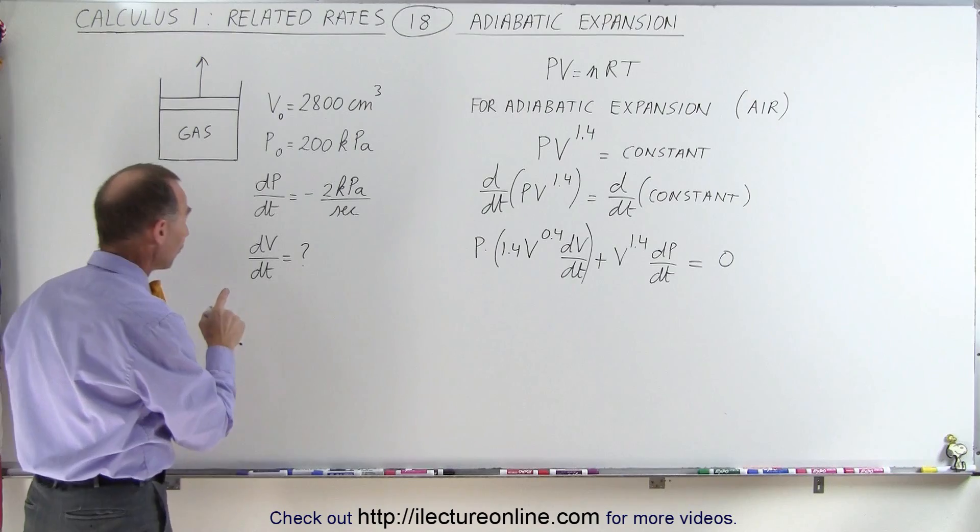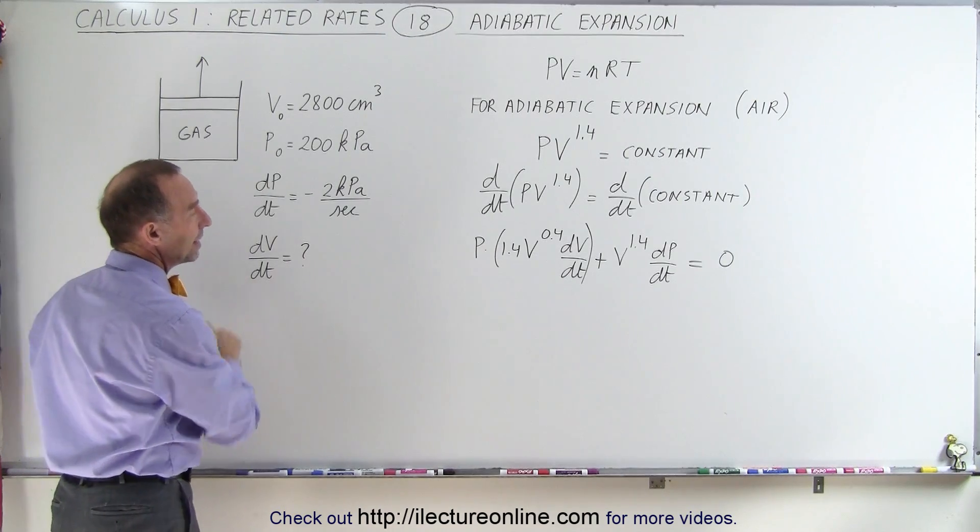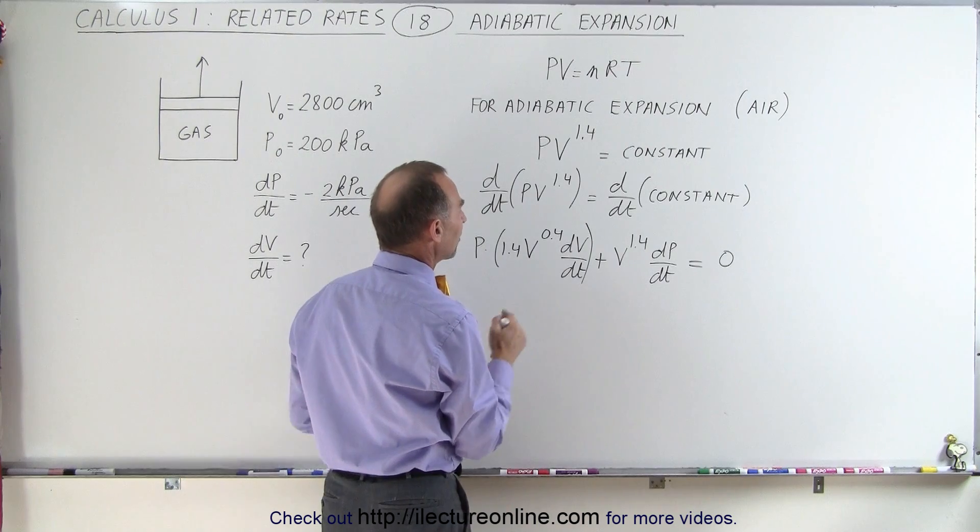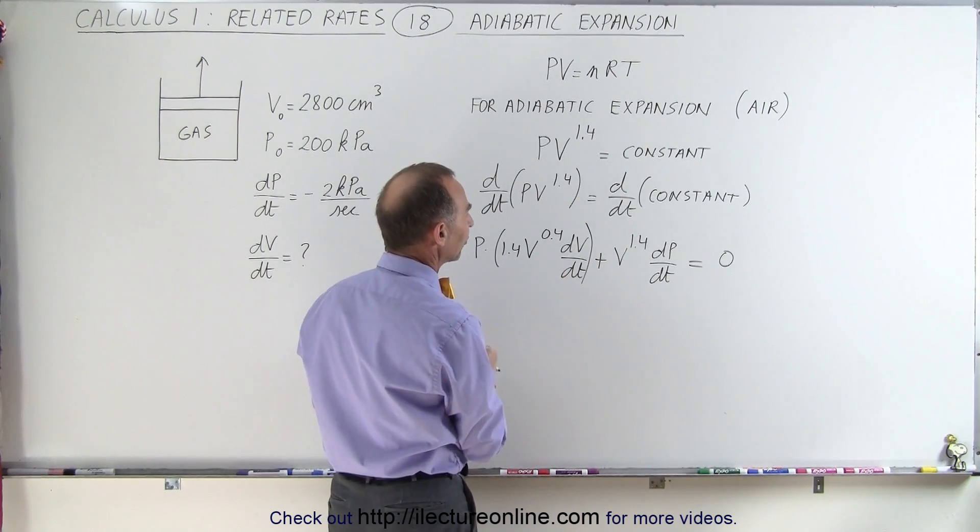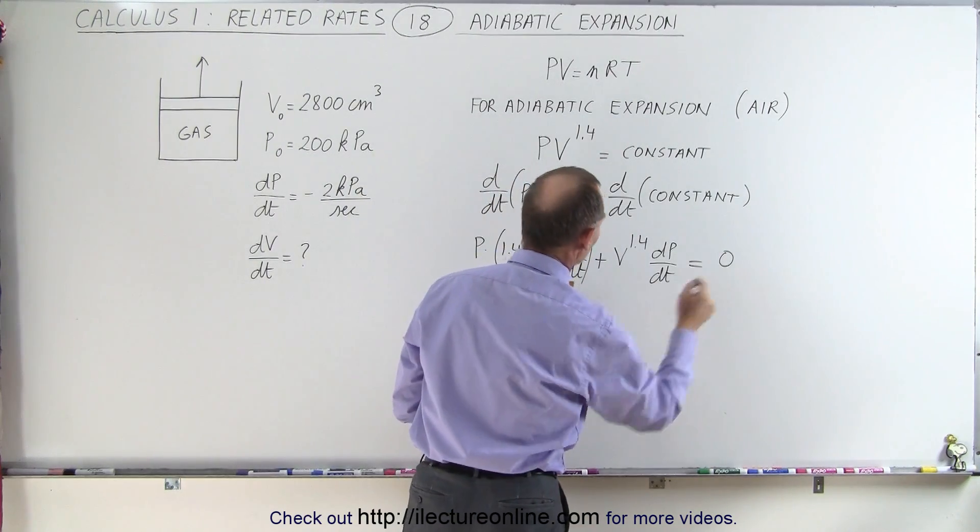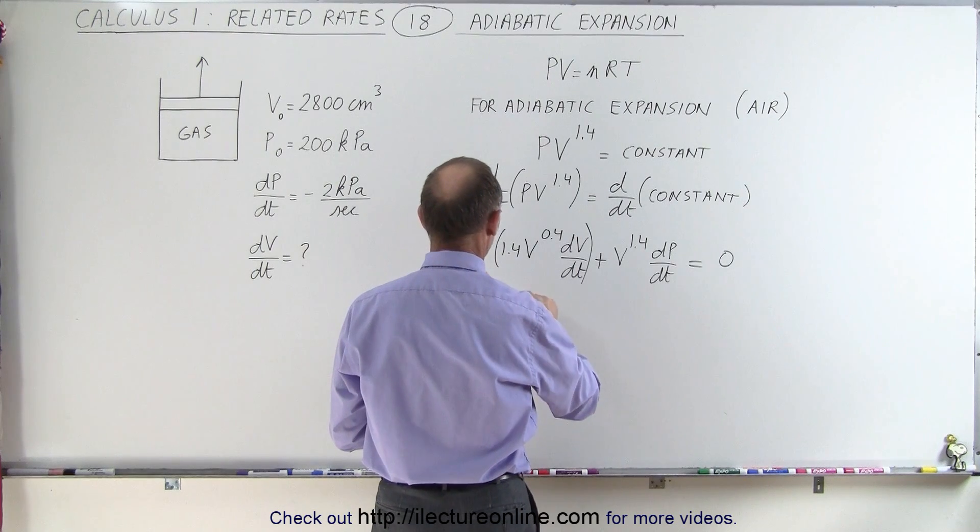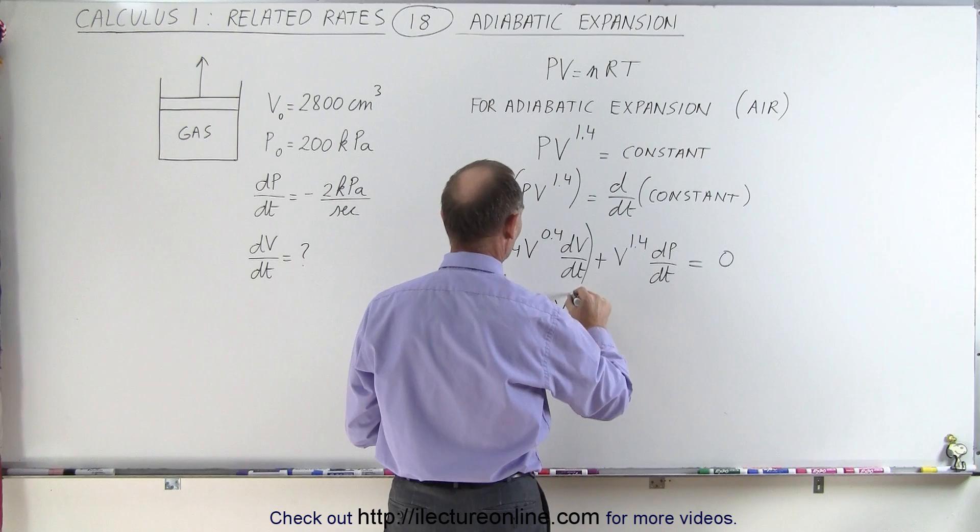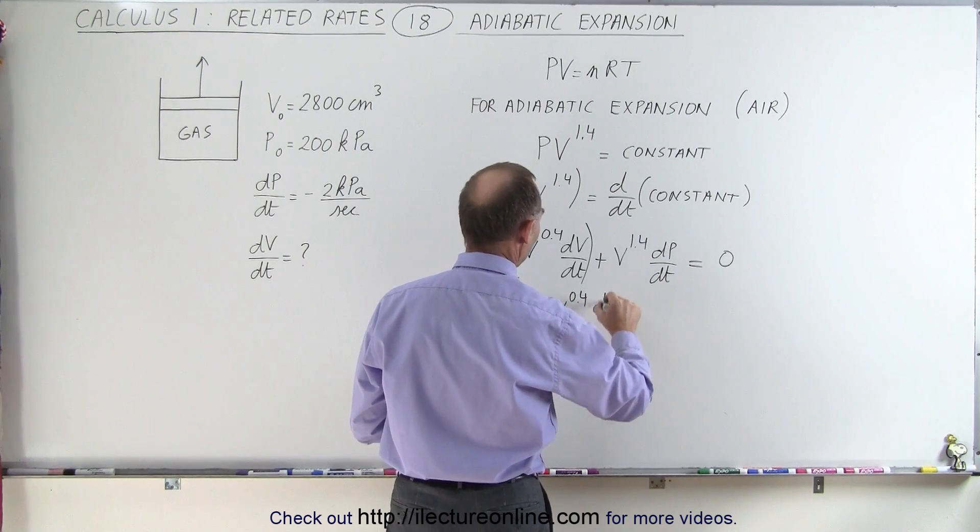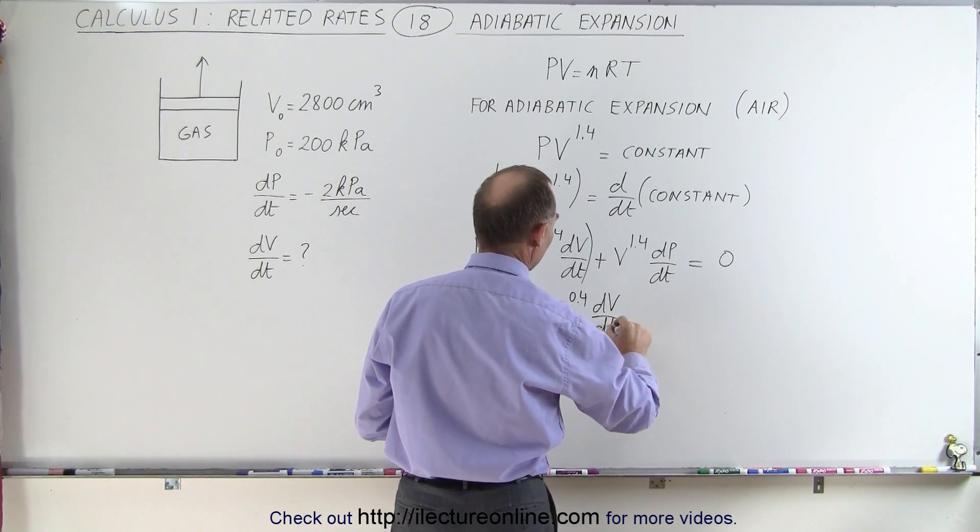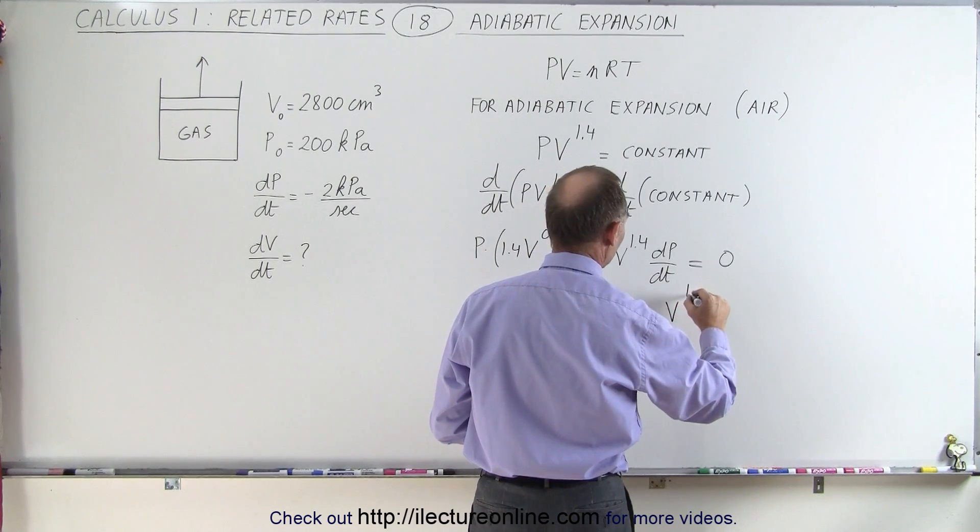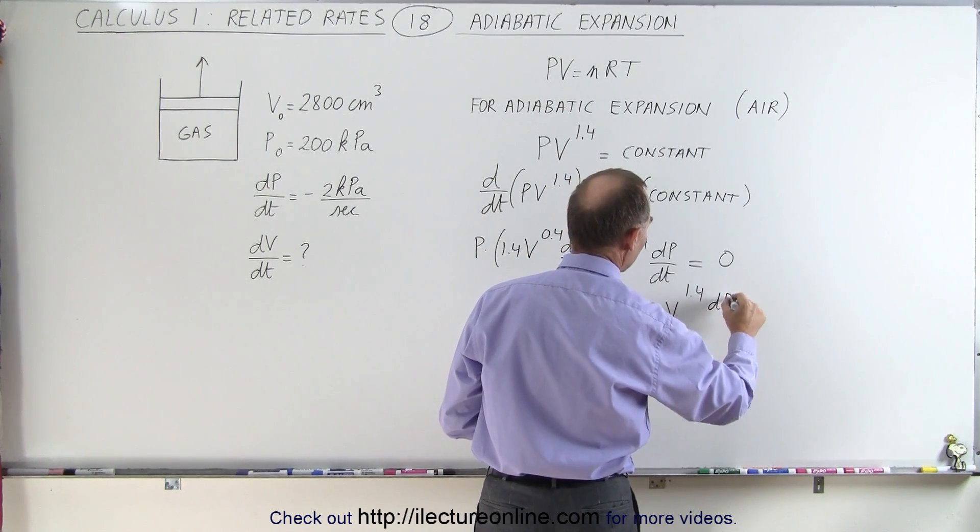Now, we're looking for dV/dt, and we have dV/dt here, so we have to isolate that from everything else. We'll start by moving this to the other side. So we'll have 1.4 P times V to the 0.4 power times dV/dt equals the negative of V to the 1.4 power times dP/dt.